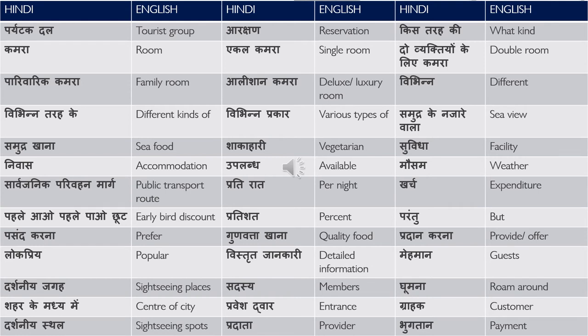इस वजह से हमें समुद्र के नज़ारे वाला कमरा चाहिए. समुद्री खाना — sea food. शाकाहारी — vegetarian. सुविधा — facility. निवास — accommodation. उपलब्ध — available. मौसम — weather.